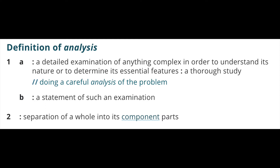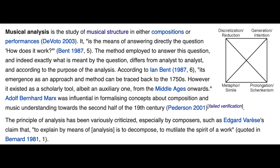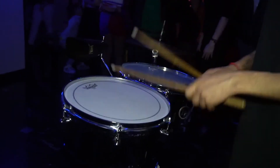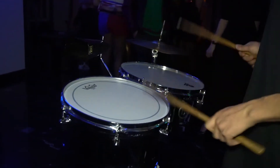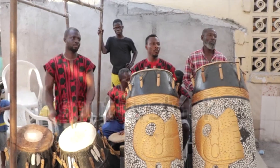Oftentimes when we talk about analysis, we talk about Roman numeral analysis — breaking a piece down into its harmonies. But there are lots of other ways that we can break down music. Harmonic analysis is just one way to analyze music, and obviously it's only useful in analyzing pieces that have harmonic content. It's not terribly useful, for example, in looking at a snare drum solo, a Ghanaian drumming piece, or even Gregorian chant.